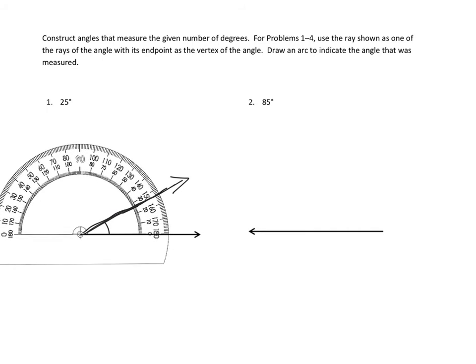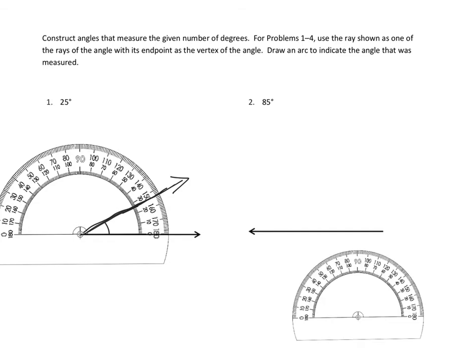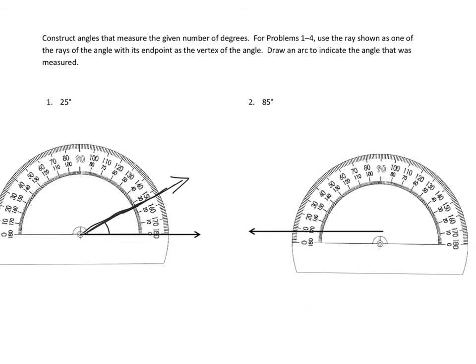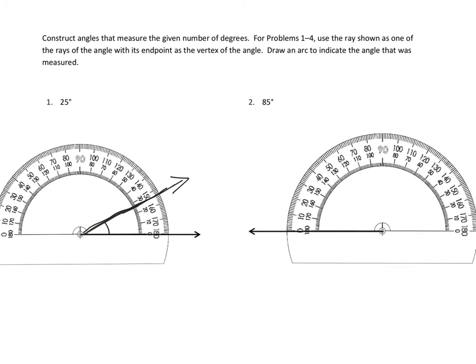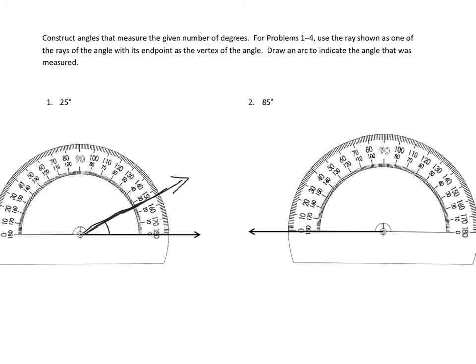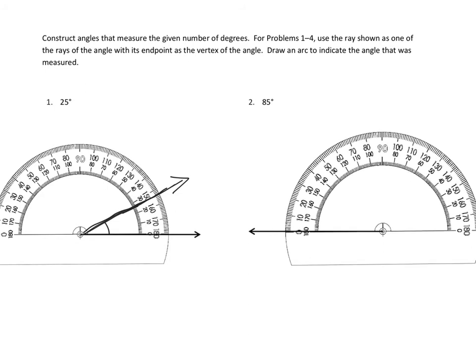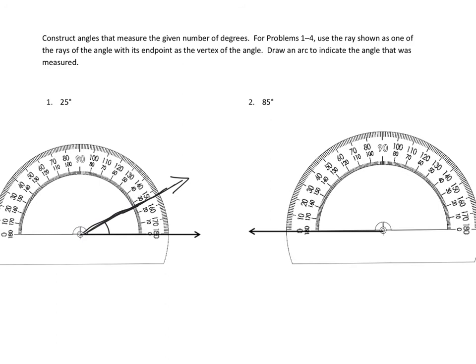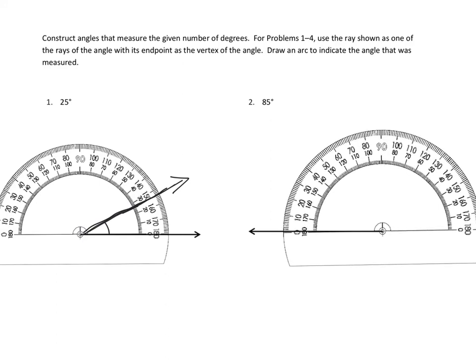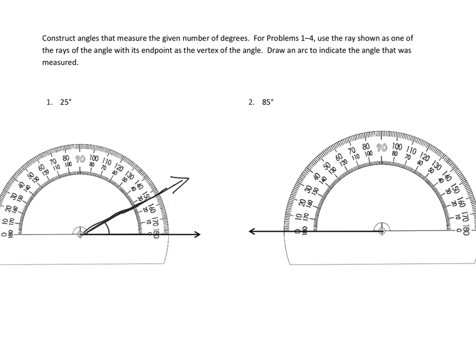Now that I've got another copy of my protractor over here, I can start working on problem number two. I'm going to match up that center point of my protractor right to the endpoint of my ray. I'm going to lay that left-hand part right down on the line there. This time I'm trying to measure 85 degrees.